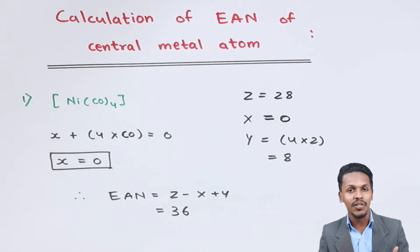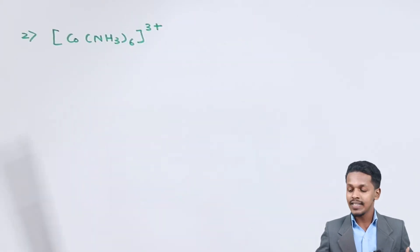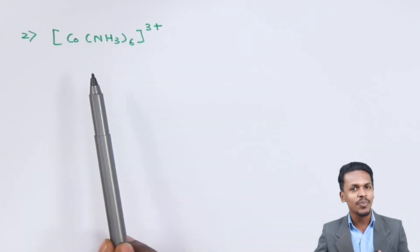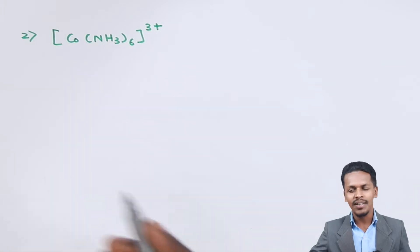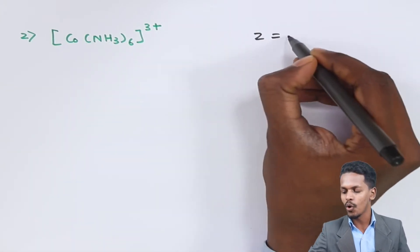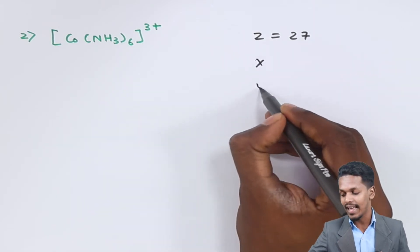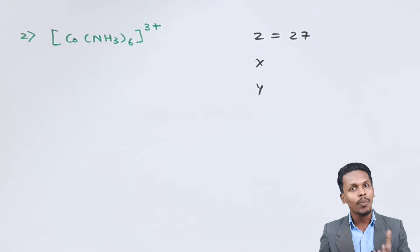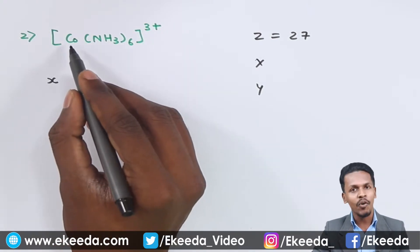The EAN of nickel in this complex is 36, which is the atomic number of Krypton, a noble element. This indicates the complex is very stable. Moving to the next example, we have a cationic complex. The atomic number of cobalt is 27, and we need to calculate X and Y. X is the oxidation number of cobalt in this complex.